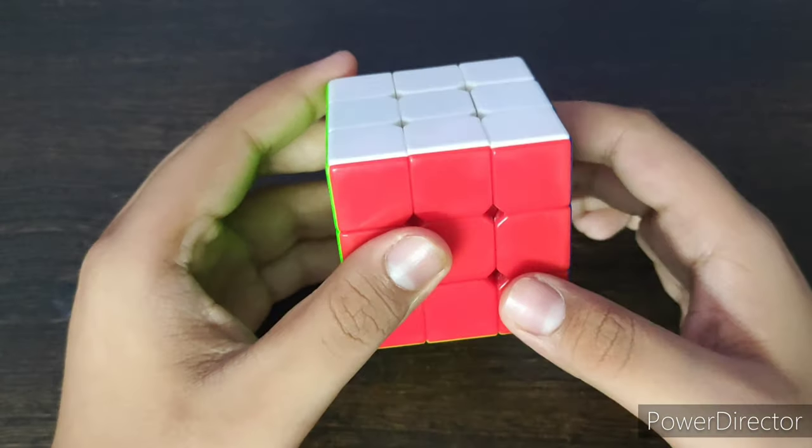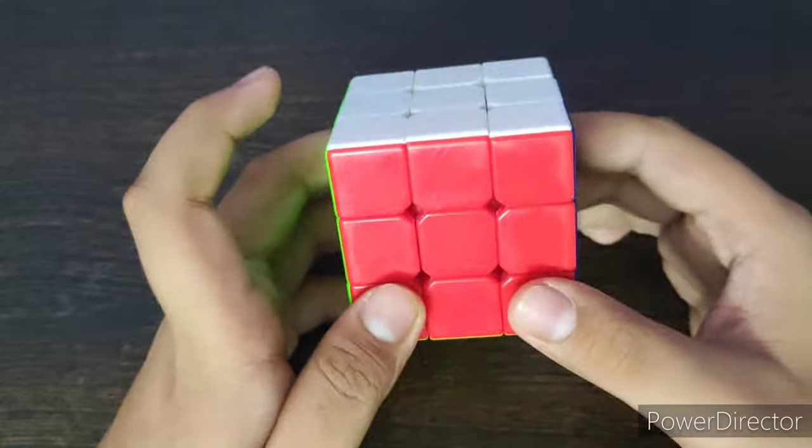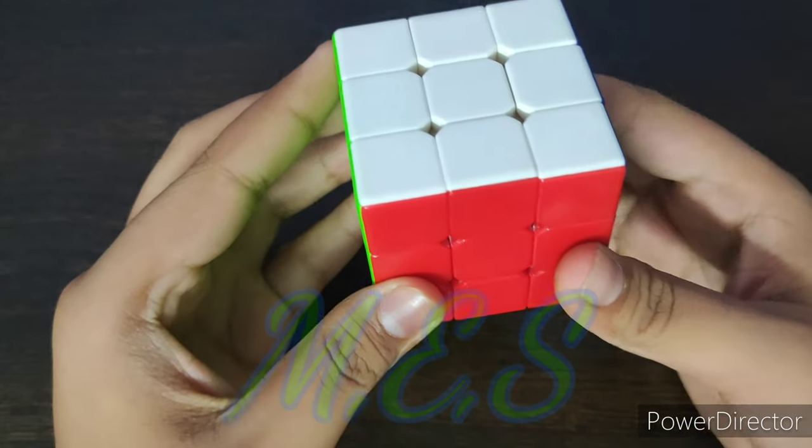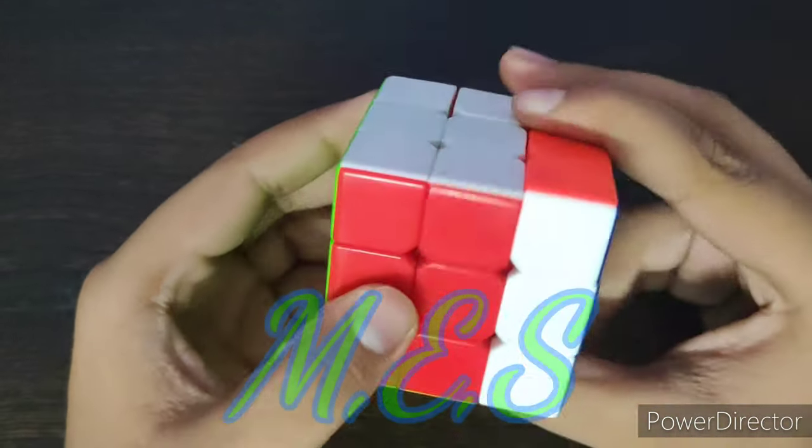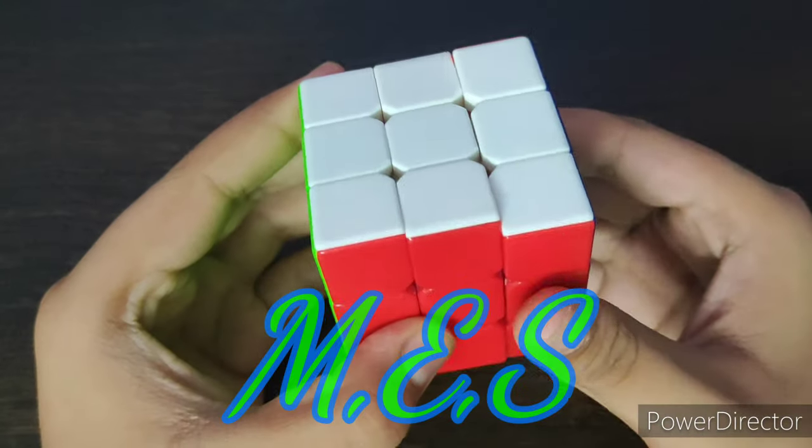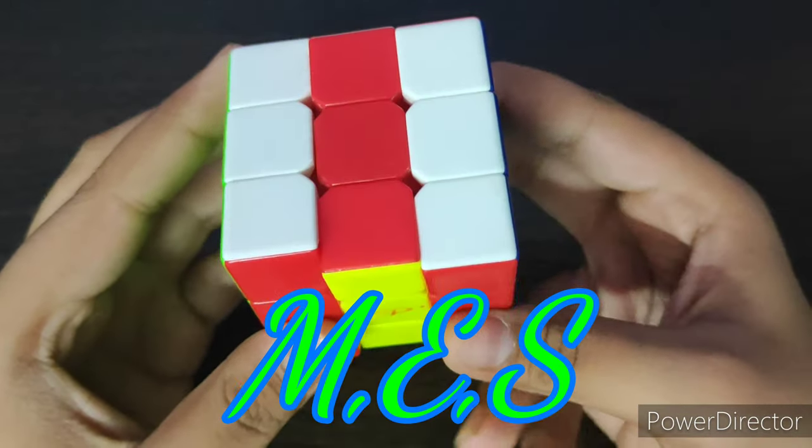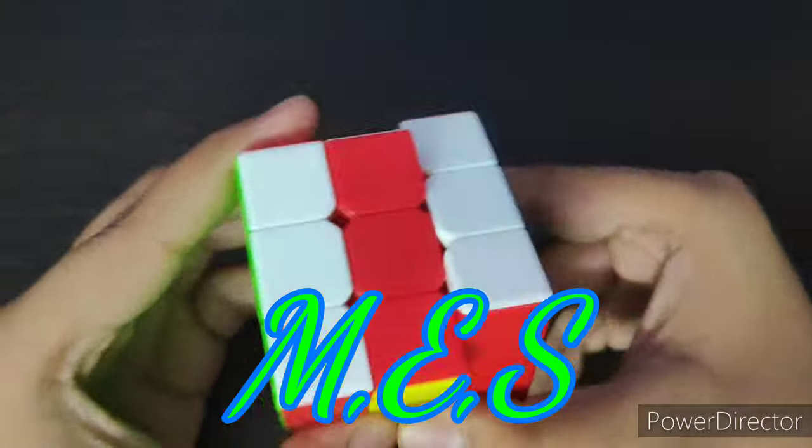So basically these all are the layers and some special layers are also there such as M, it is a middle layer. It goes like this. If you want you can do like this, or if you're going on the alternative one again by the other you can first take your third finger then the second one like this to be fast on it.